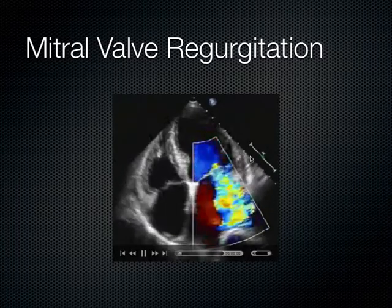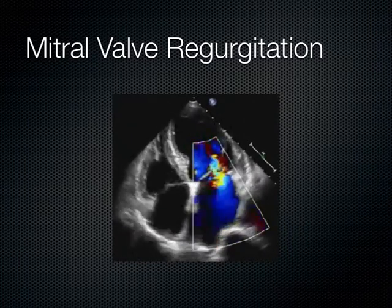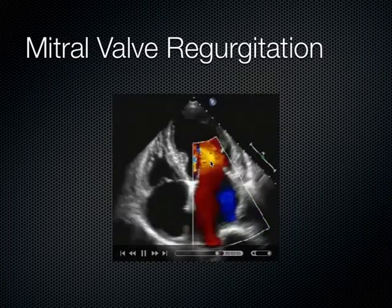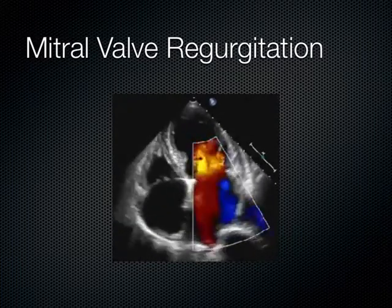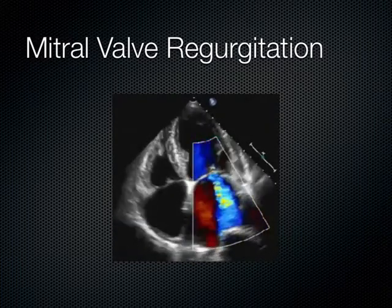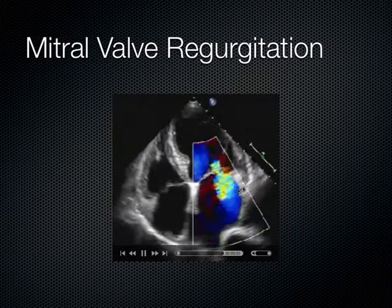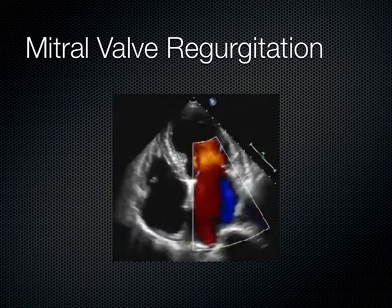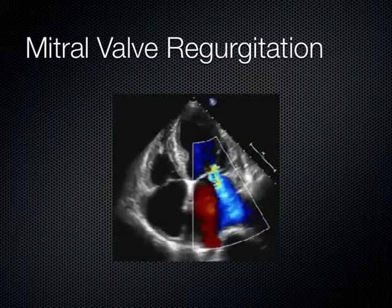To look at the mitral valve, the apical 4-chamber view is best, where we can see BART — blue away, red towards. During systole, there is a blue jet that moves away from the probe's footprint and into the left atrium. Each time the left ventricle squeezes, as we put color flow Doppler over the mitral valve, we can see a blue jet squirting back into the left atrium. This blue jet hitting the back wall of the left atrium essentially means the patient has mitral valve regurgitation.